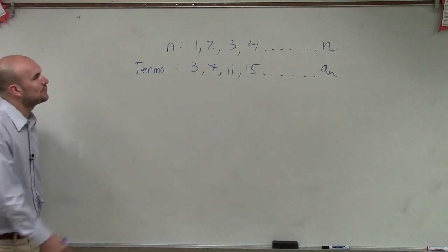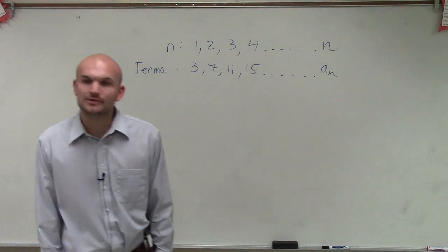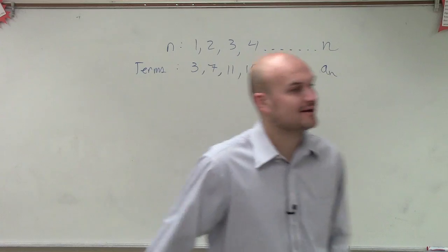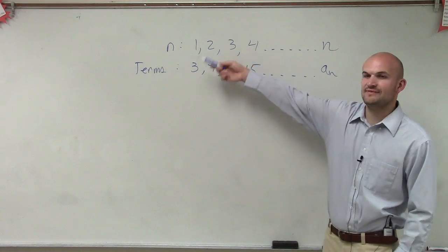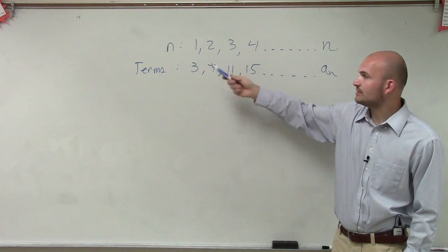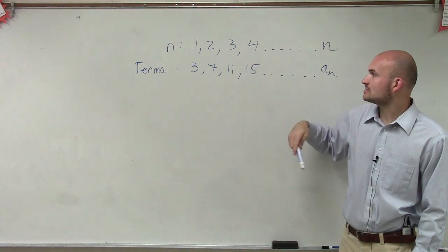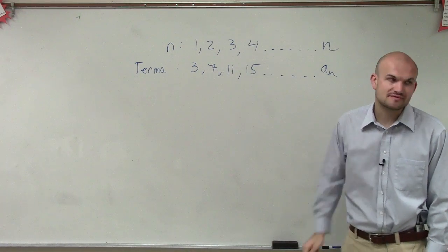So we have n equals 1, 2, 3, and 4. Those are going to be our n values. Then the terms for each one: a sub 1 equals 3, a sub 2 equals 7, a sub 3 equals 11, a sub 4 equals 15.